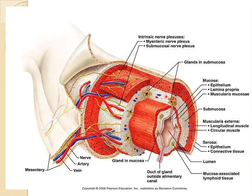The muscularis mucosa is followed by the submucosal layer — a connective tissue layer outside the mucosa — which contains blood vessels, lymphatics, and a network of nerve fibers called the submucosal nerve plexus, otherwise known as Meissner's plexus. The layer outside the submucosa is the muscularis layer, which has two layers: circular muscle fibers forming the inner layer and longitudinal muscle fibers forming the outer layer.